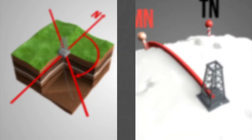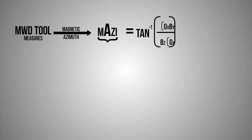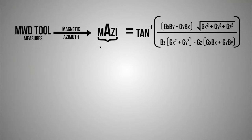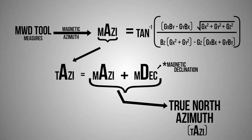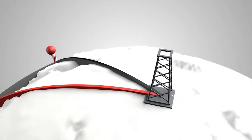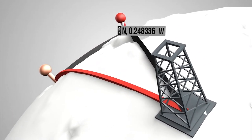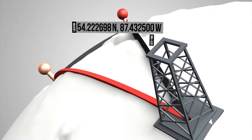But the story doesn't end there. Once a magnetic azimuth is determined, it immediately needs to be converted to a true north reference azimuth. This is done by adding the corresponding magnetic declination to the magnetic north referenced azimuth the MWD tool measured. Correct determination of magnetic declination requires a known geographic location and time.